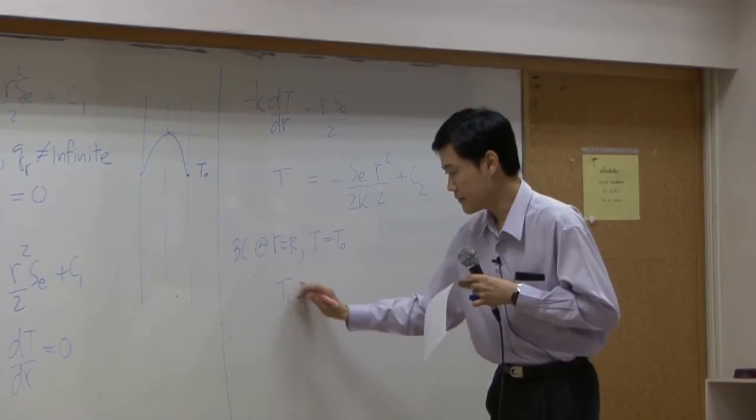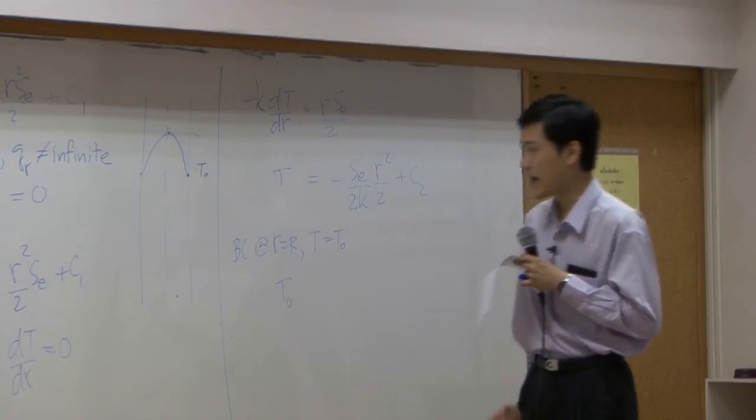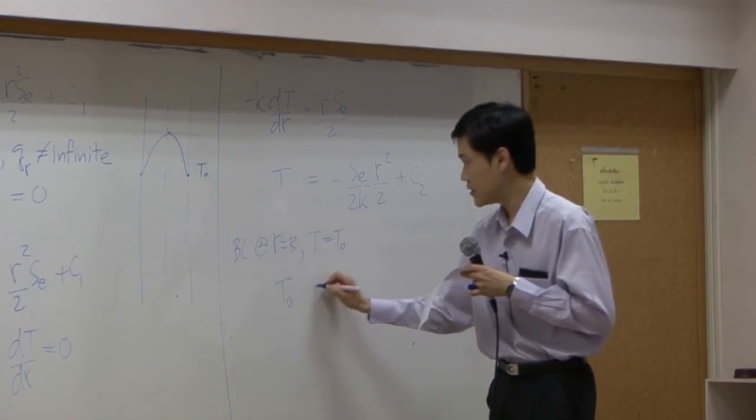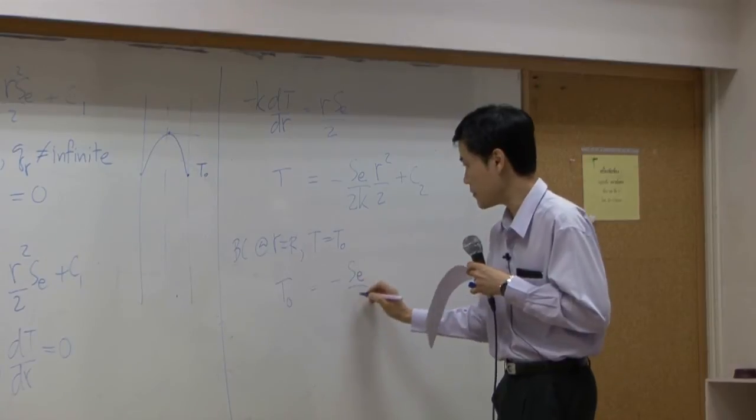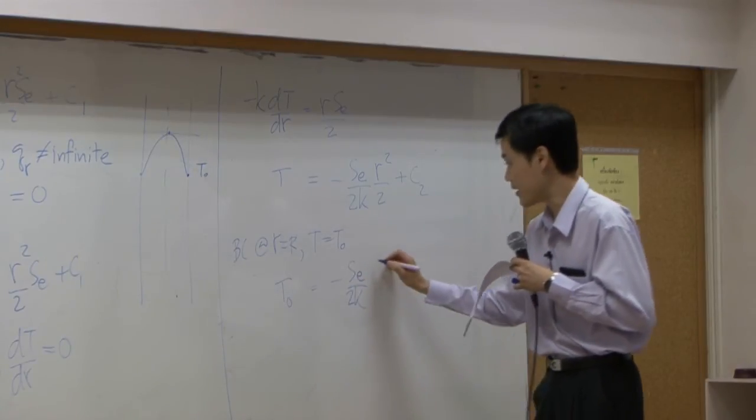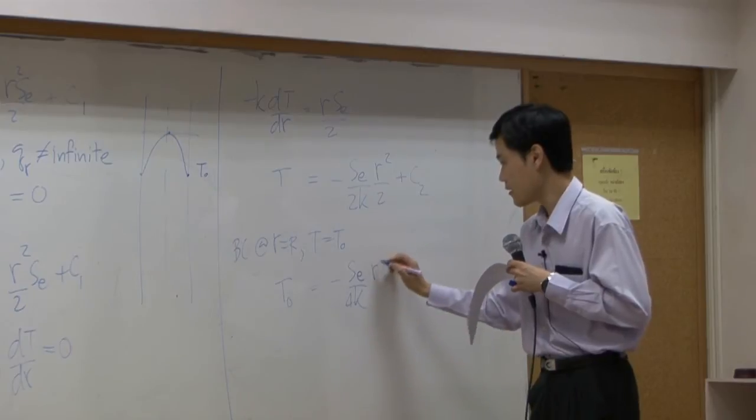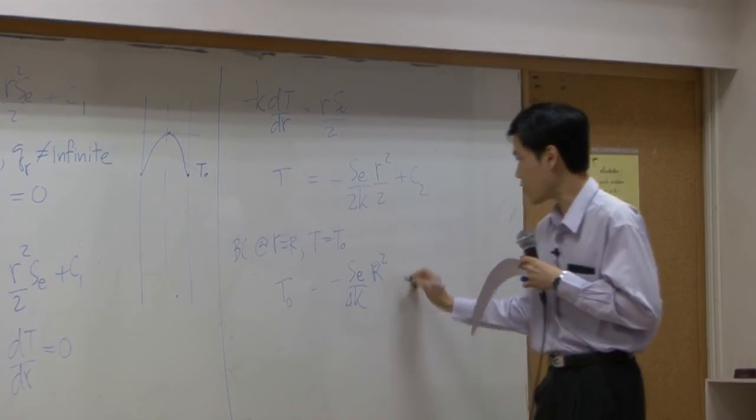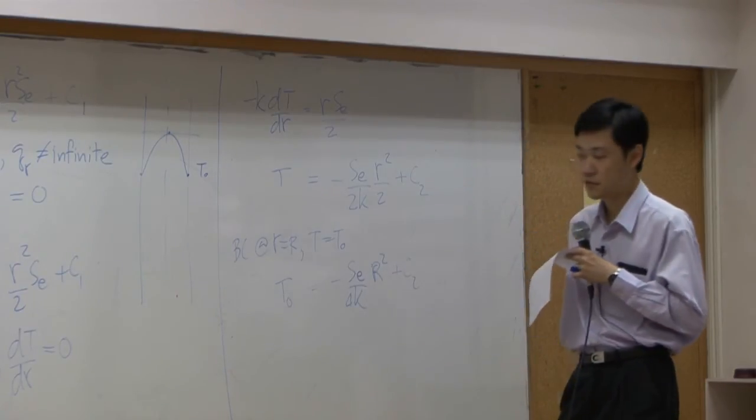So then take it back into equation t0 is equal to minus se over 2k of 4k capital R squared plus c2. Then you get c2,